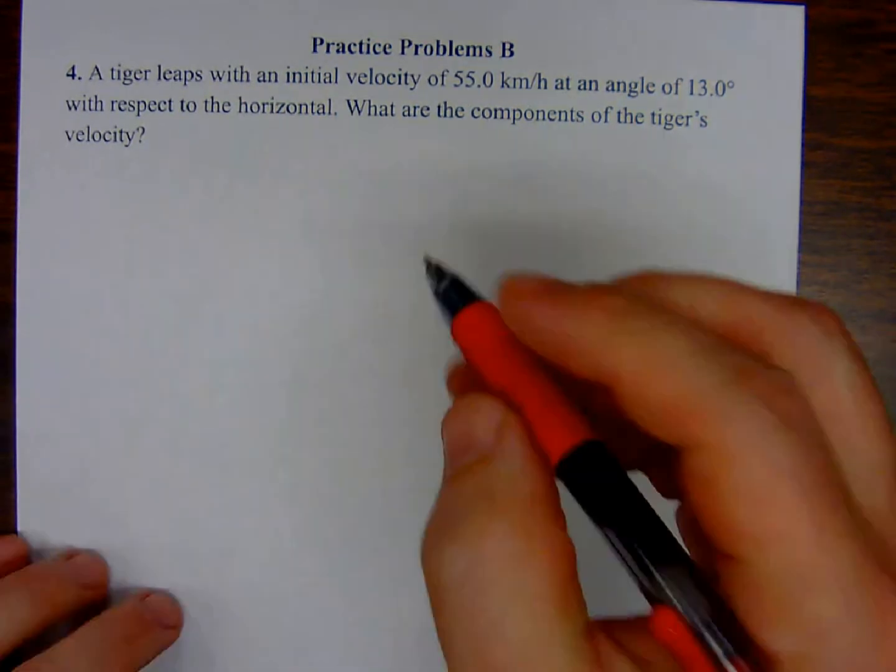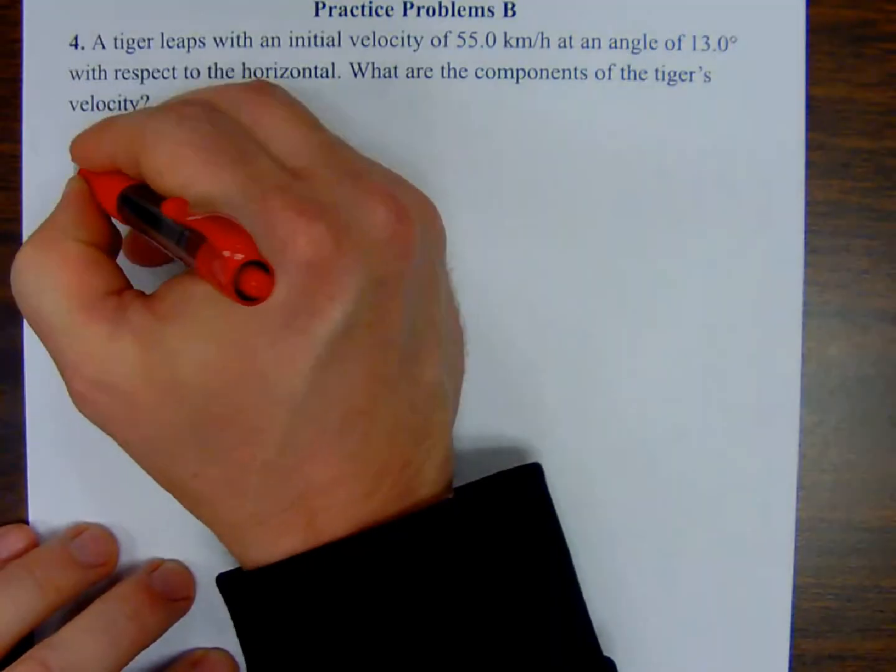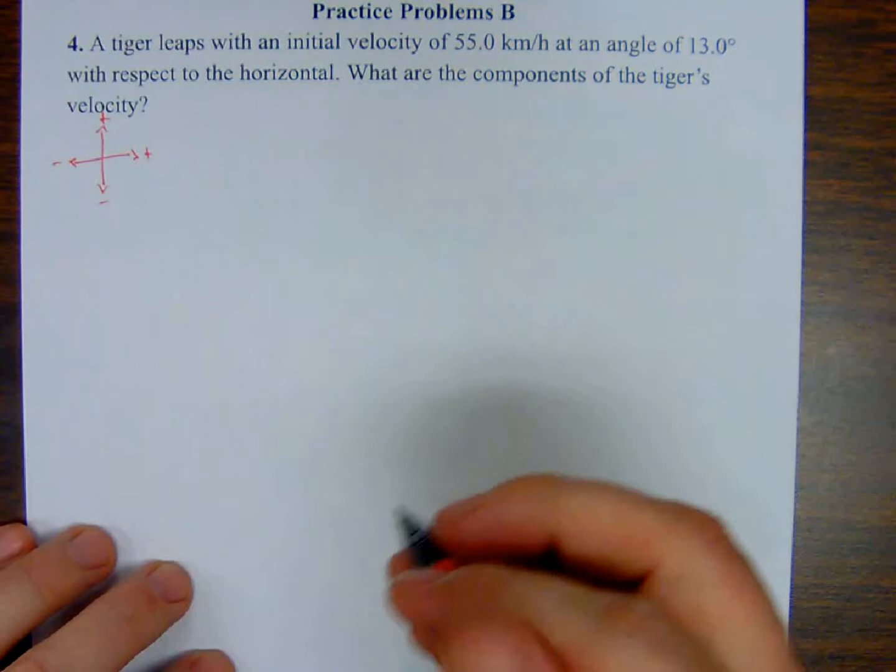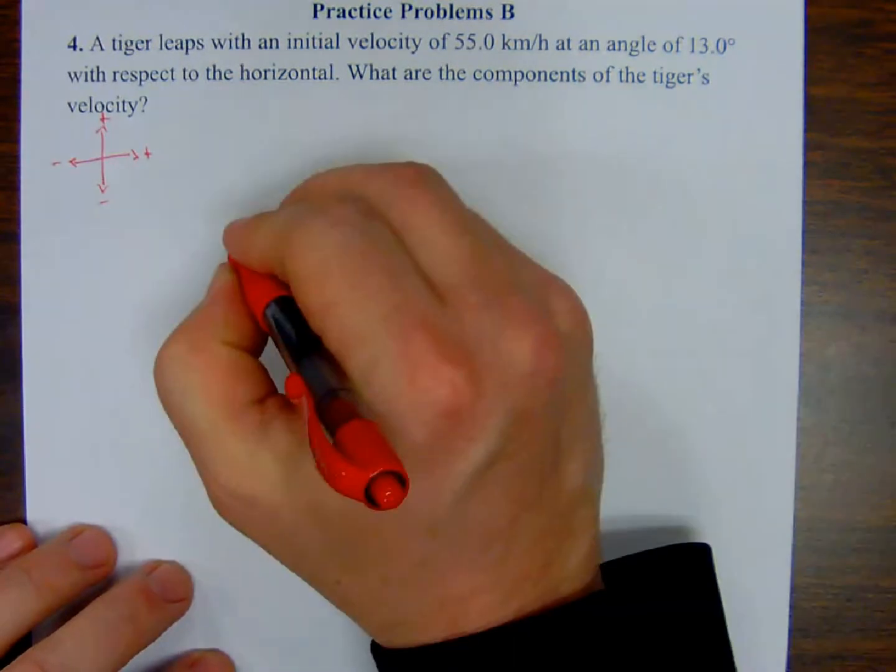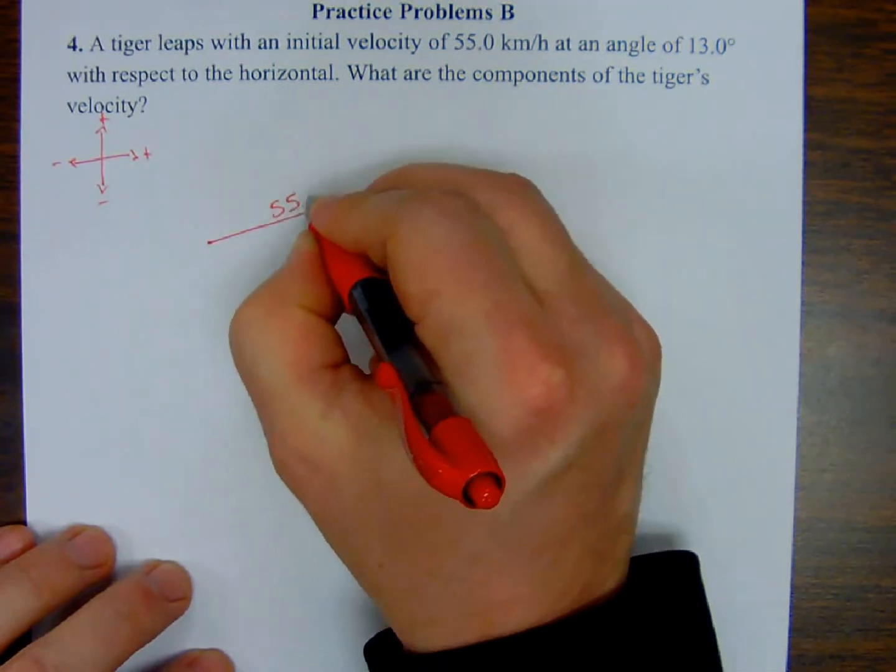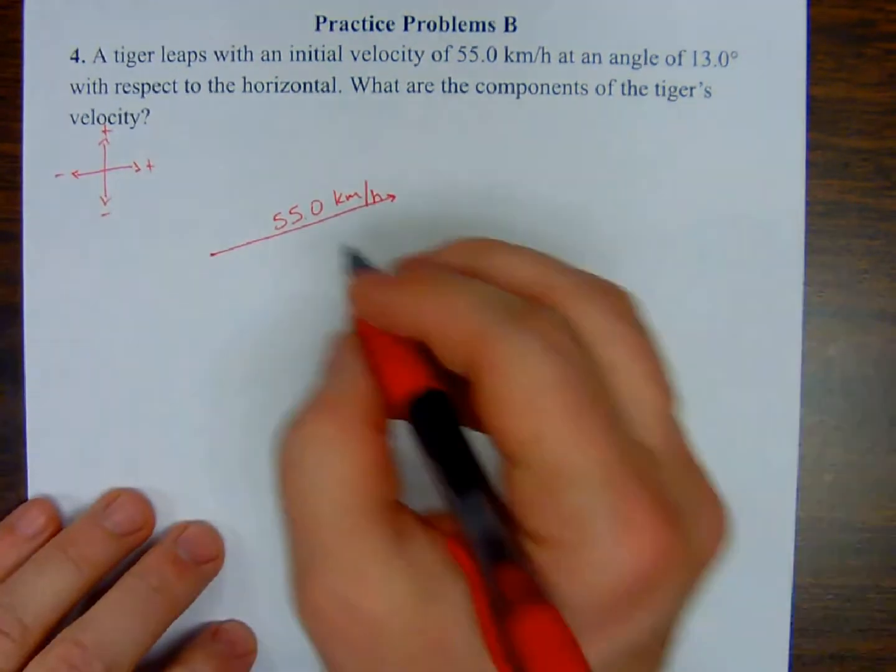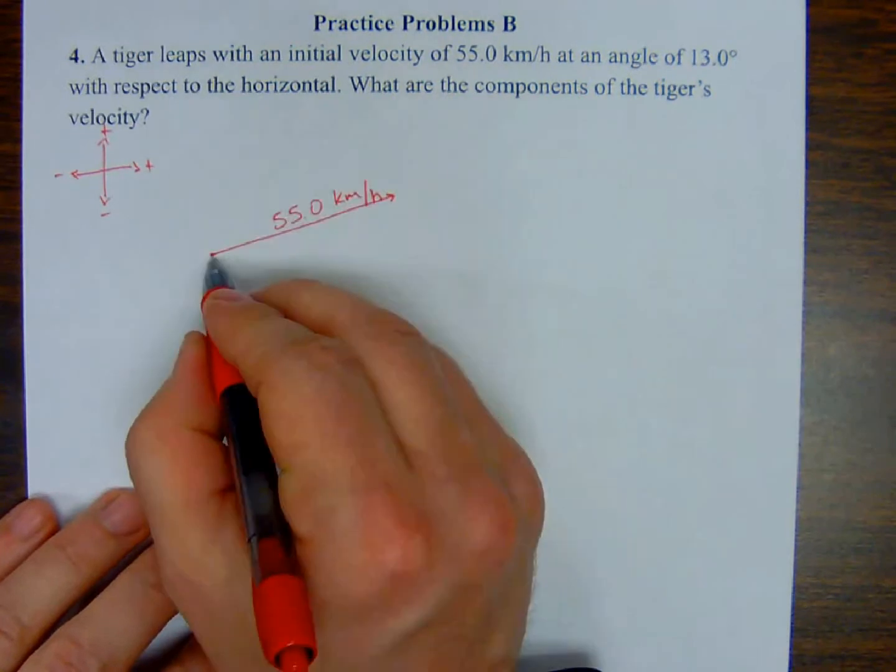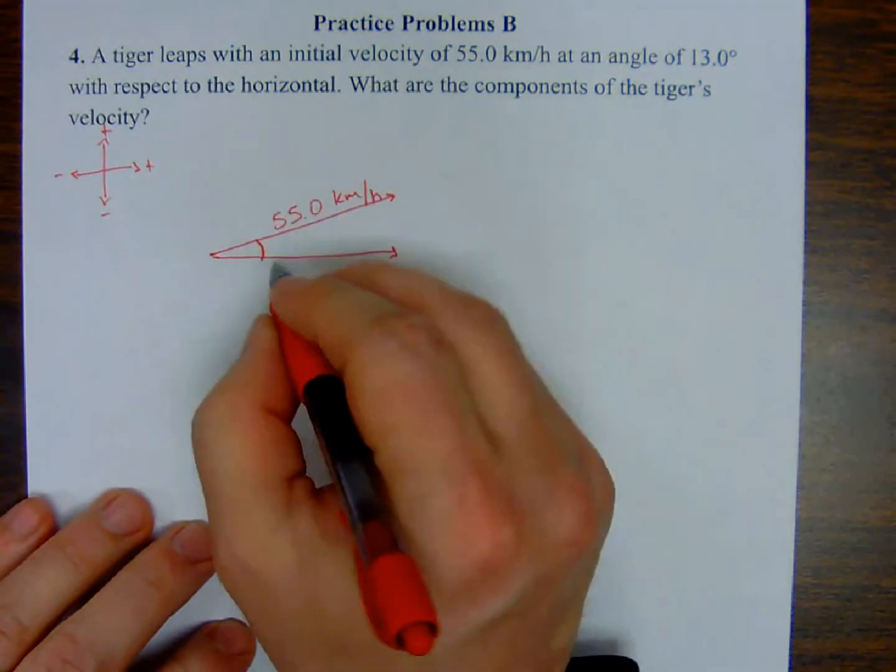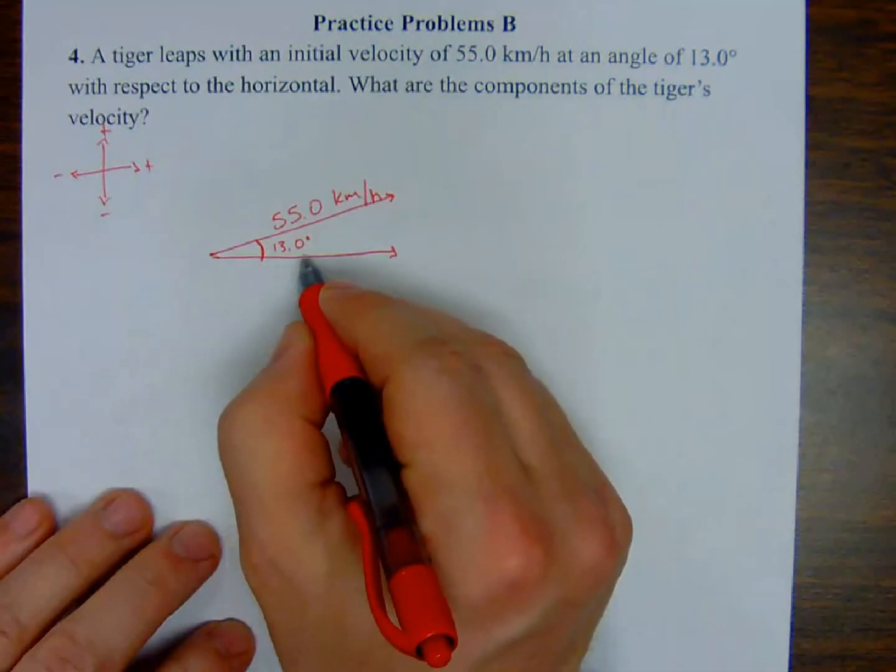We have a situation with four directions, using our normal ones. We have a tiger that has a velocity in the air with a leaping of 55.0 kilometers per hour. But with respect to horizontal, here's the horizontal. Here's the angle, 13.0 degrees with respect to horizontal, so it's going up that way, 13.0 degrees.